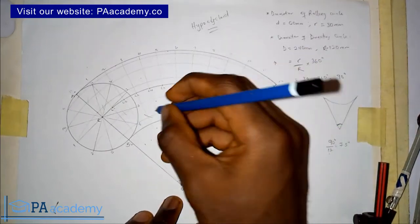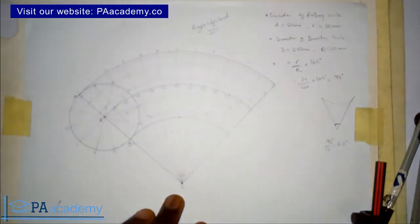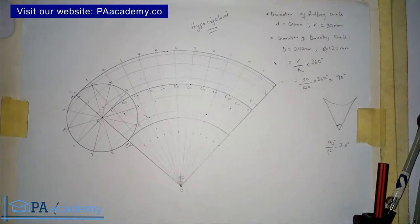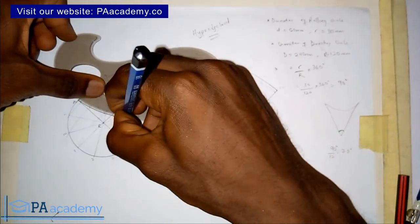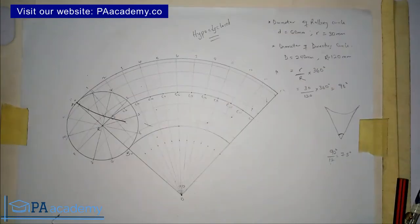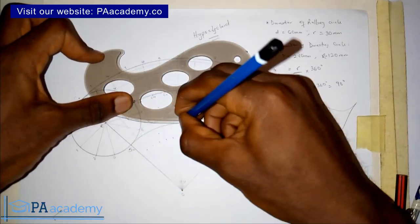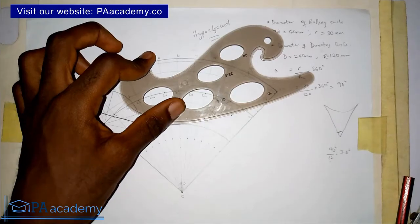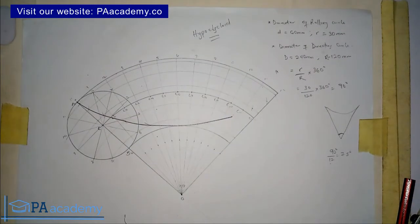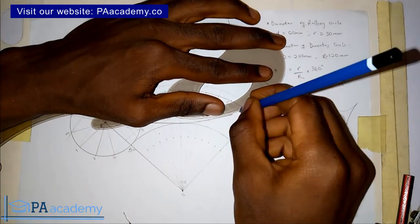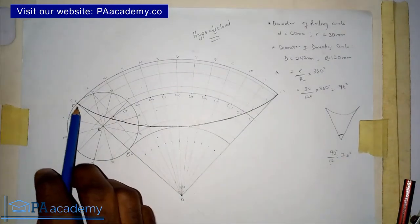Note the points on lines 7, 6, 5, 4, 3, 2, and 1. Now join all those points together using the French curve. We are gradually completing our hypocycloid by tracing through all the plotted points with the French curve.